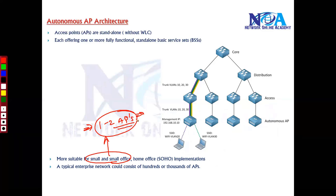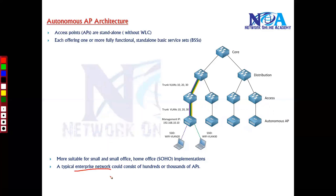But technically when you have even 10 to 15 access points, it's not an easy job to manage each and every one individually — that's really not applicable in typical enterprise networks. A typical enterprise network may have something around hundreds to thousands of access points.